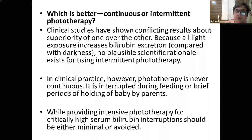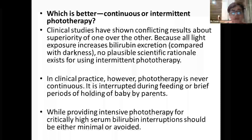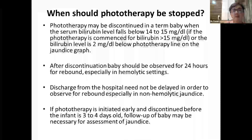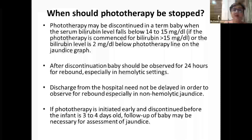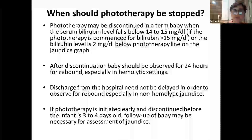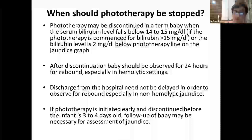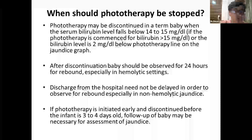Continuous versus intermittent phototherapy: there is no clear-cut answer, as phototherapy is always interrupted during feeding and holding. However, during intensive phototherapy for high bilirubin levels, interruptions should be minimal. Phototherapy may be discontinued in a term baby when serum bilirubin falls below 14–15 mg/dL, or 2 mg/dL below the phototherapy line on the jaundice graph. In hemolytic settings, observe for rebound over the next 24 hours; discharge need not be delayed for non-hemolytic jaundice. If phototherapy was initiated early and stopped before 3–4 days of life, follow-up is mandatory.